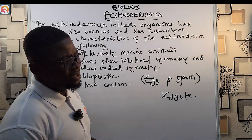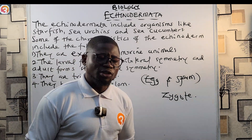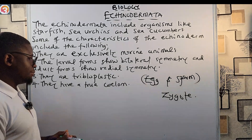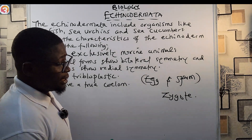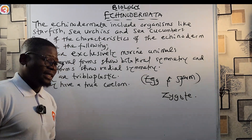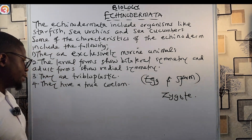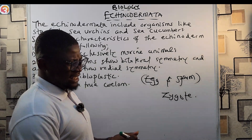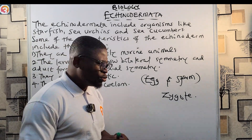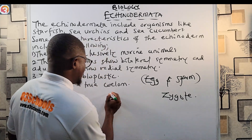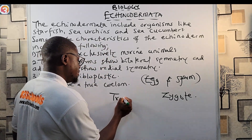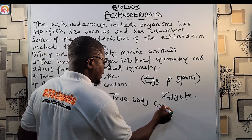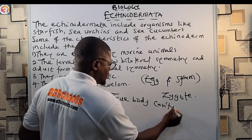Third, they are triploblastic — they have three cell layers or three germ layers: the ectoderm, mesoderm, and endoderm. They also have a true coelom, meaning they are coelomate and have a true body cavity.